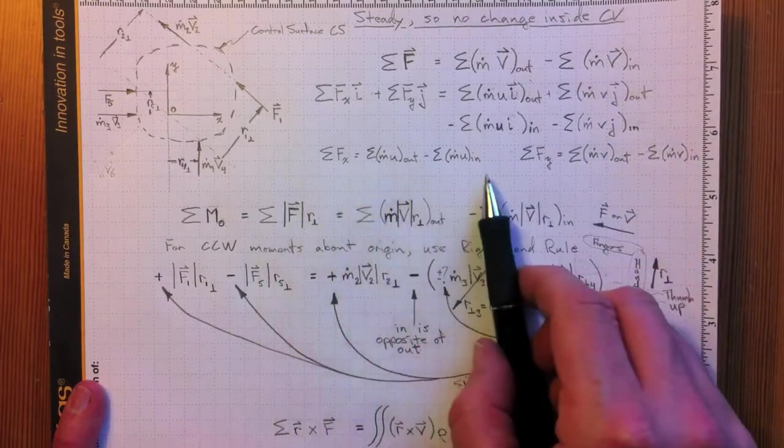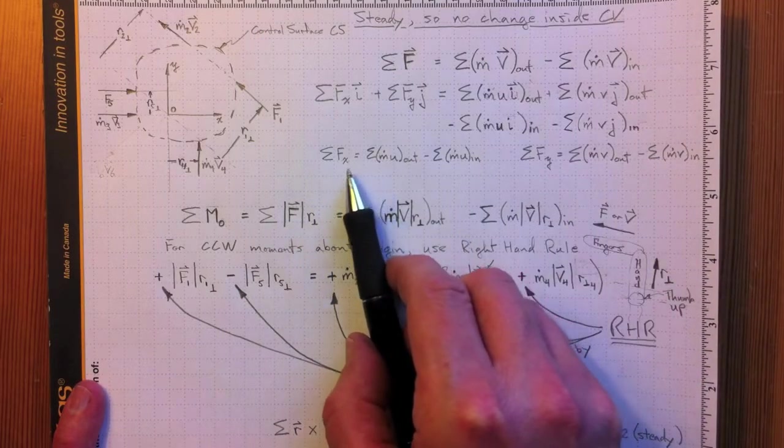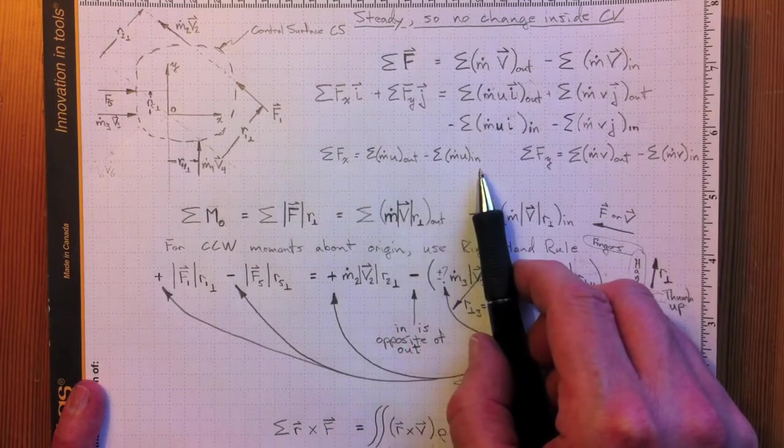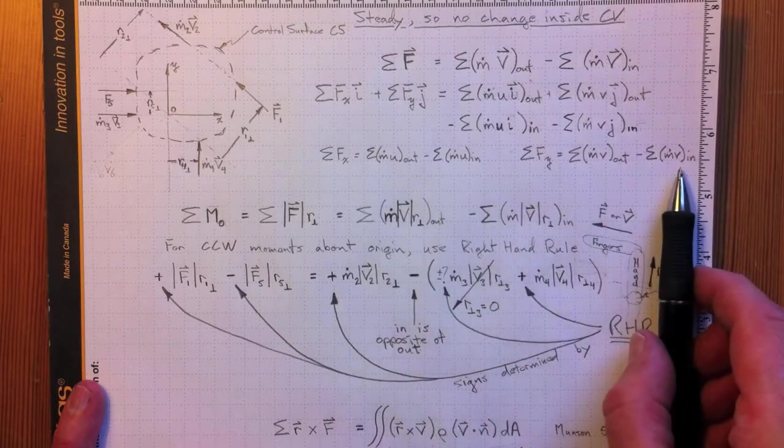When we separate that into two separate equations for the separate components, sum of the forces in the x direction equals m dot u out minus m dot u in, summation over all of the inflows and outflows, same in y.